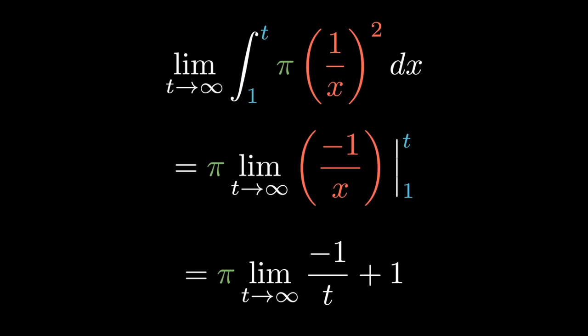Since the limit as t approaches infinity of 1/t is equal to 0, the integral is equal to π. So the volume of Gabriel's horn is equal to π.